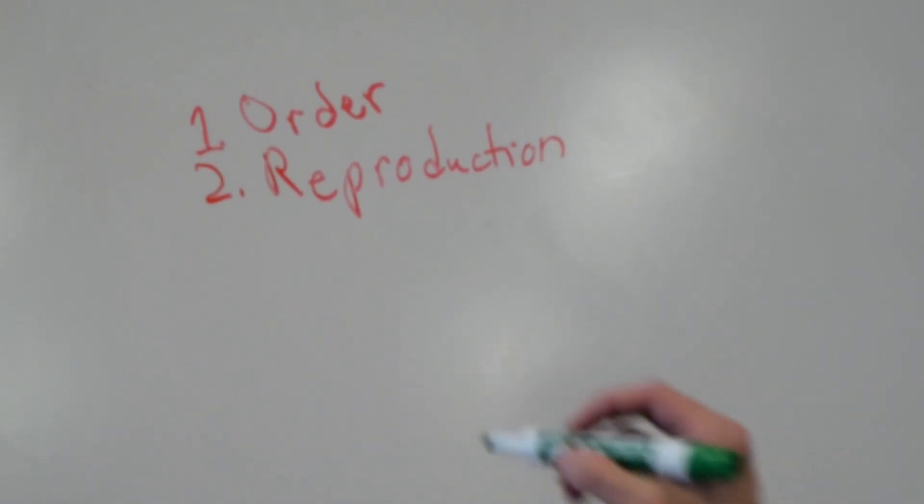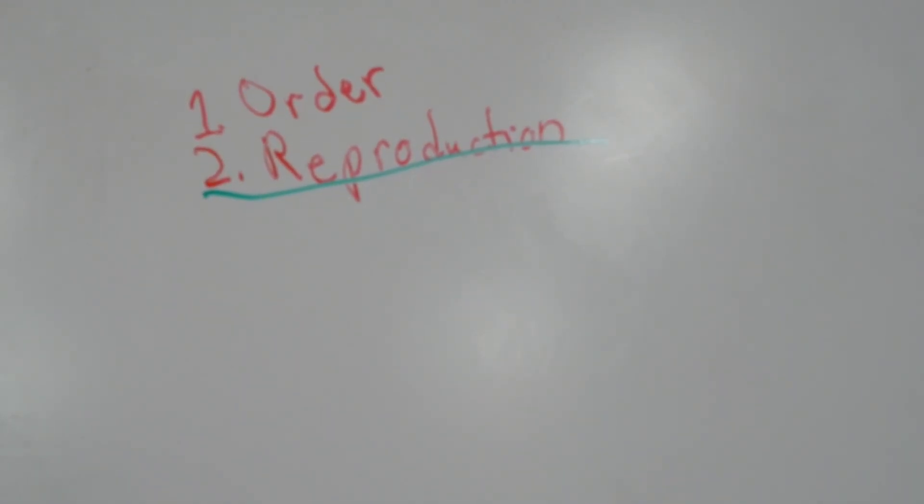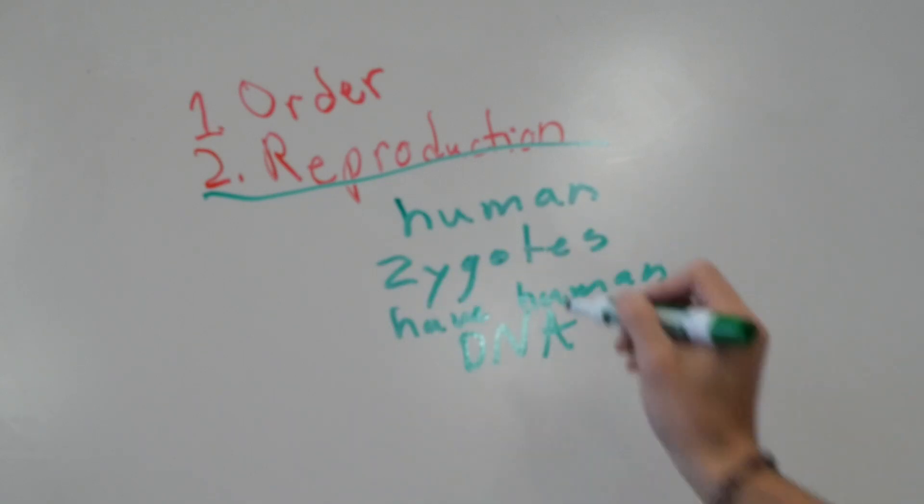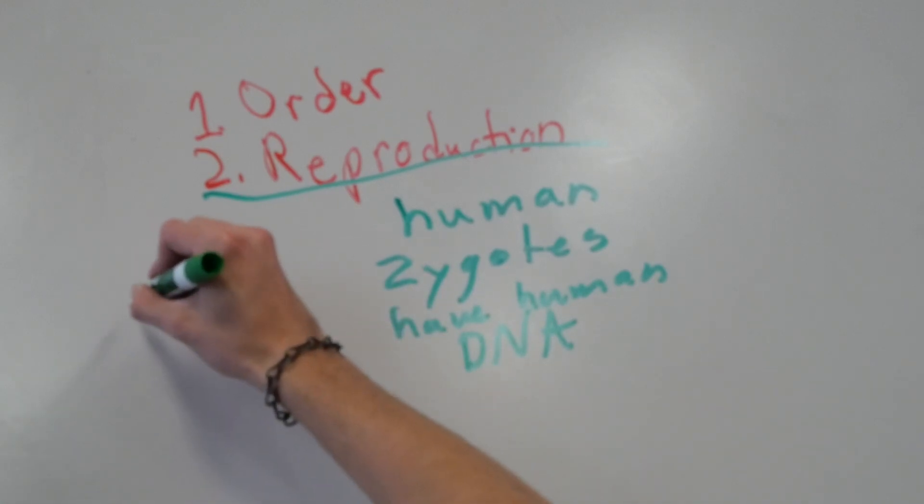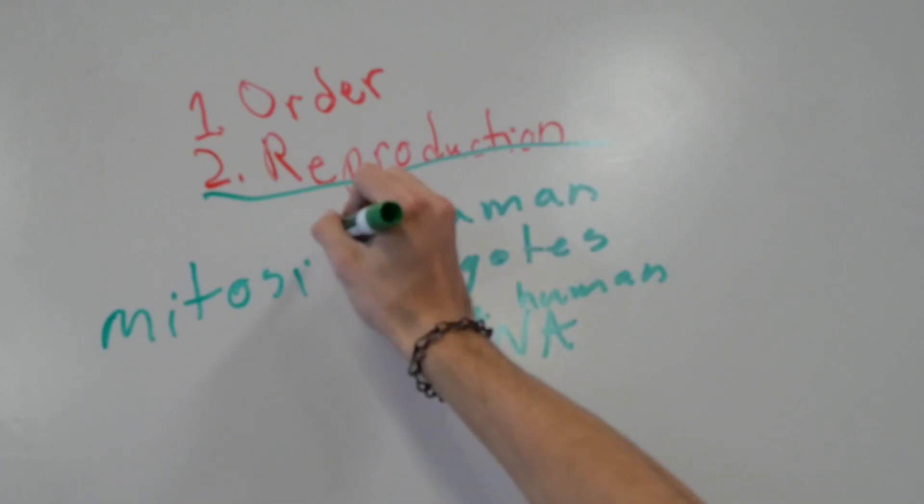The second characteristic is reproduction. Technically, this characteristic applies more on a species level rather than an individual level. If it didn't, every single infertile person wouldn't be considered living. But in a way, a newly conceived fetus can reproduce. Within the first two days of fertilization, a group of cells can separate from the rest and start forming another human. This is how identical twins come to be.